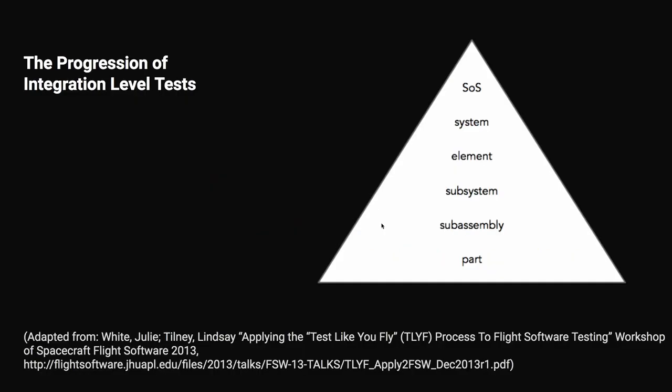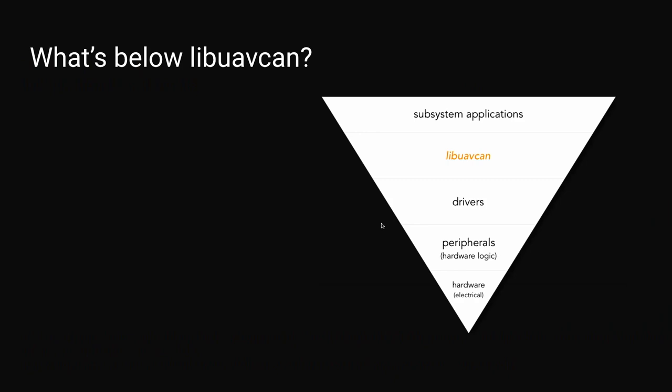This is kind of a typical system — the way we look at a system in testing. We've got a system of systems: the system element, the subsystem, subassembly, and part. For me, what I'm considering is LibUavCAN here — because it's a library, I'm actually treating it as a part. And as a part, what's underneath me are the drivers, then the peripherals those drivers are on, and then the hardware those peripherals are connected to. Above me are the subsystems that are using my part.